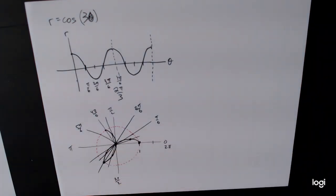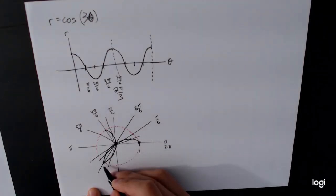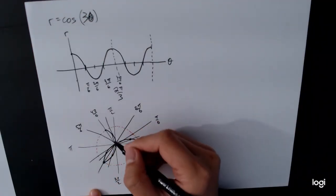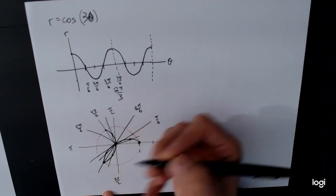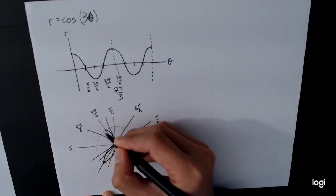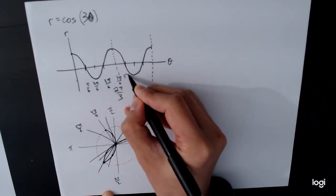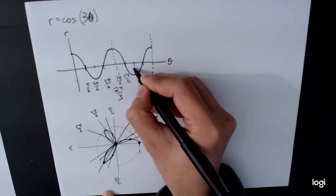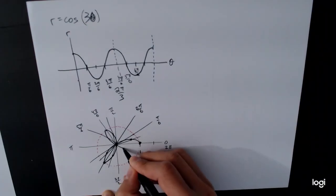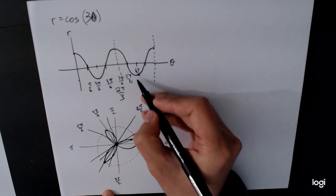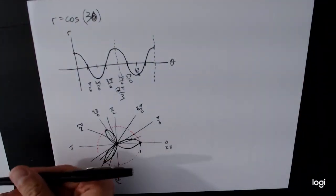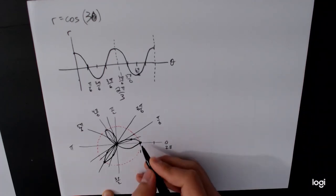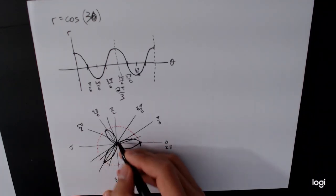From this, we can start to see a pattern developing. The graph goes from 1 down to 0 to negative 1 to 0 to 1. So we take this and curl it around — it gets to 0 by the time it reaches 5 pi over 6. Then between 5 pi over 6 and 6 pi over 6, it goes out to radius negative 1. Since pi is facing this way but the radius is negative 1, that takes you back to where we started, giving us a complete figure.